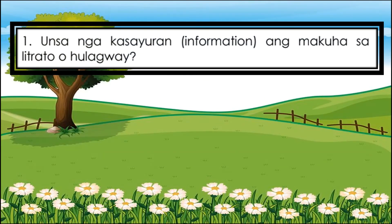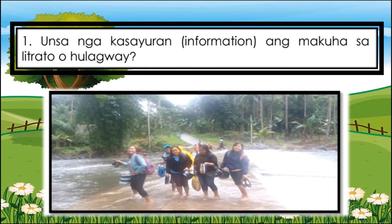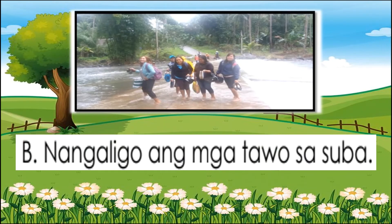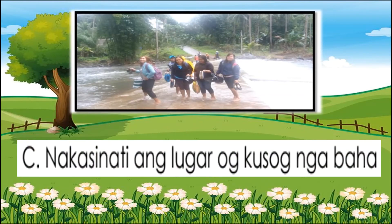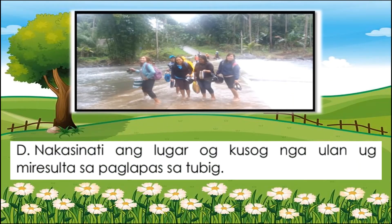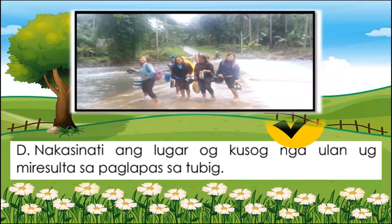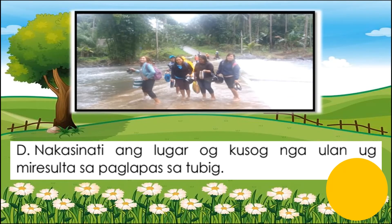Unsa nga kasayuran o information ang makuha sa litrato o hulagway? A. Mitabok ang mga tao sa tulay. B. Nangaligo ang mga tao sa suba. C. Nakasinati ang lugar og grabe nga baha. O D. Nakasinati ang lugar og grabe nga ulan o naresulta sa paglapas sa tubig. Sakto, letrang D ang tubag.